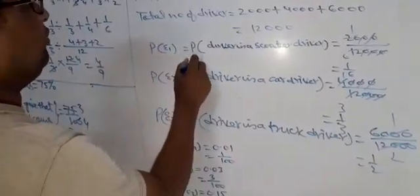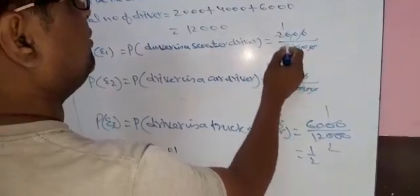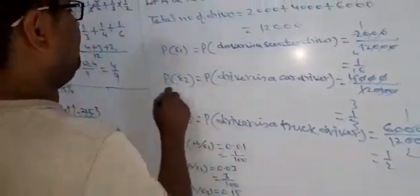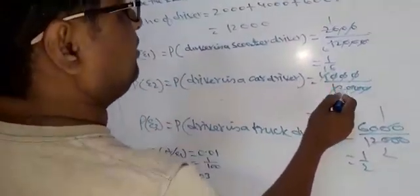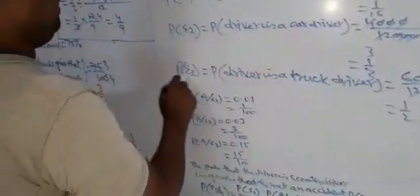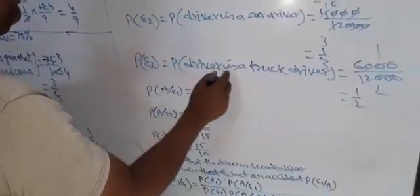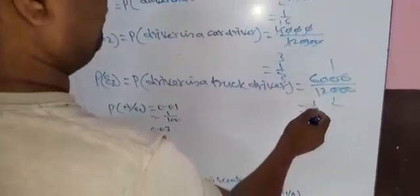P(E1) equals the probability the driver is a scooter driver = 2,000/12,000 = 1/6. P(E2) equals the probability the driver is a car driver = 4,000/12,000 = 1/3. P(E3) equals the probability the driver is a truck driver = 6,000/12,000 = 1/2.